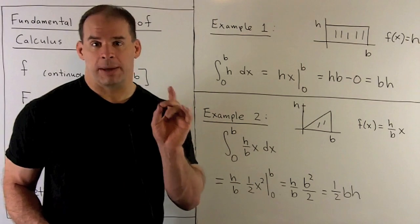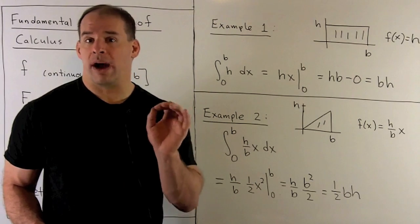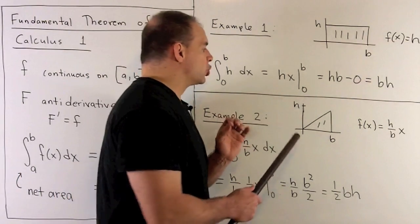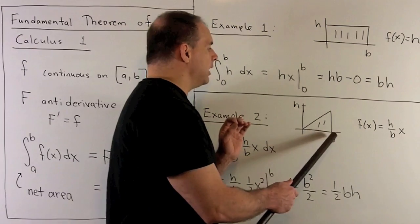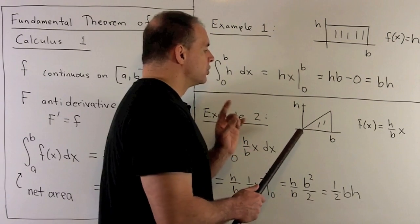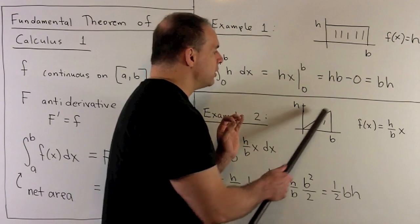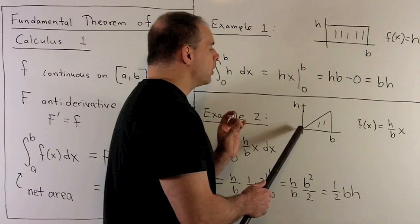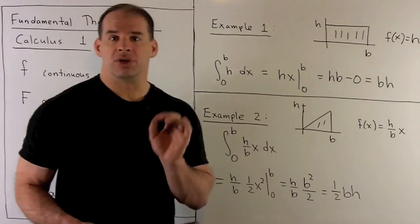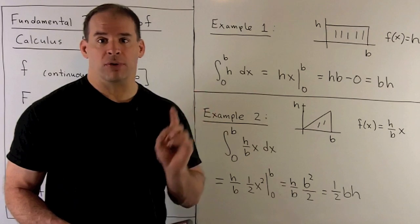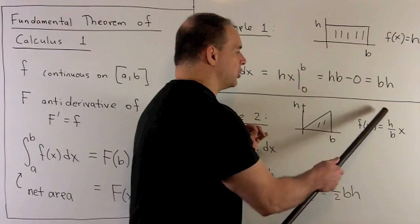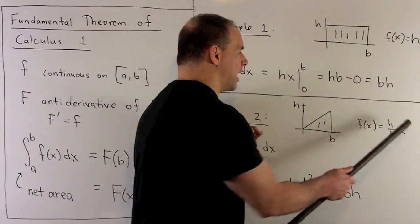Next example — same idea, we go after a familiar shape. We have a triangle with base of length b and height h. The function we're going to use goes through the origin as a straight line. The slope is rise over run, so it's h over b. We have f(x) equal to (h/b) times x.